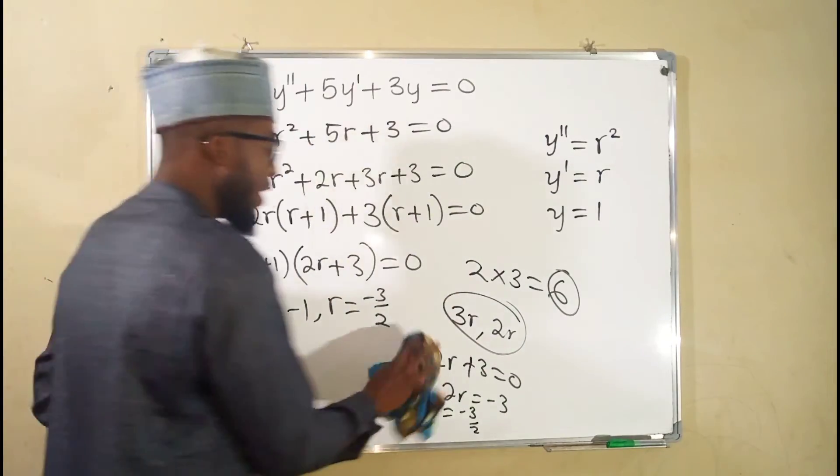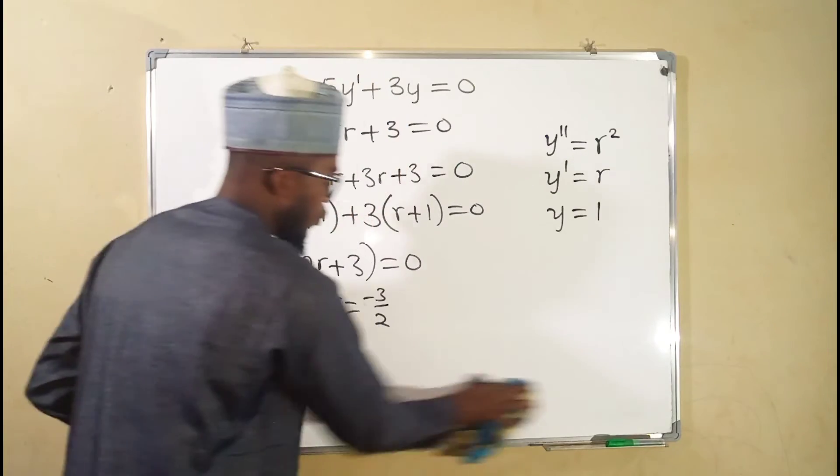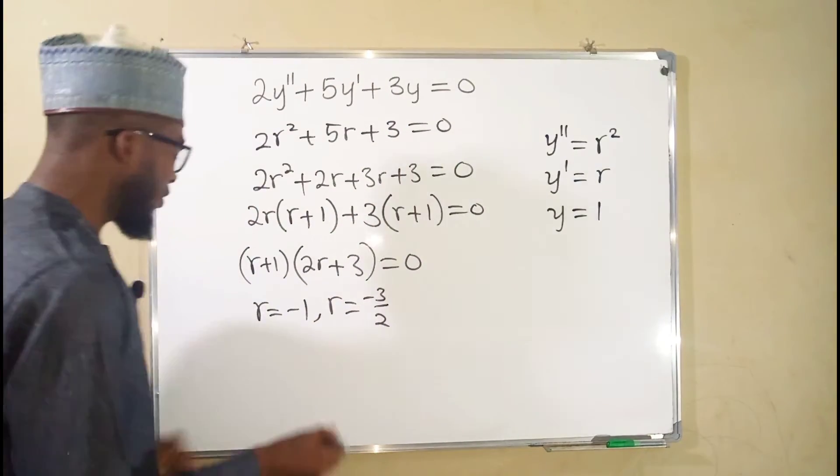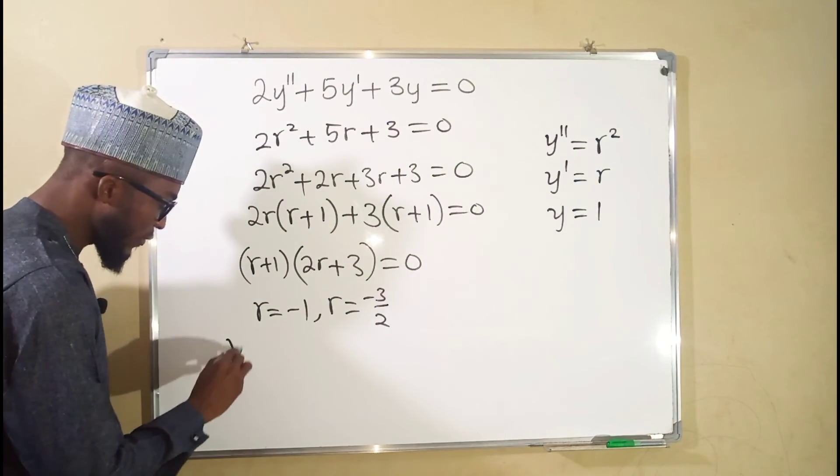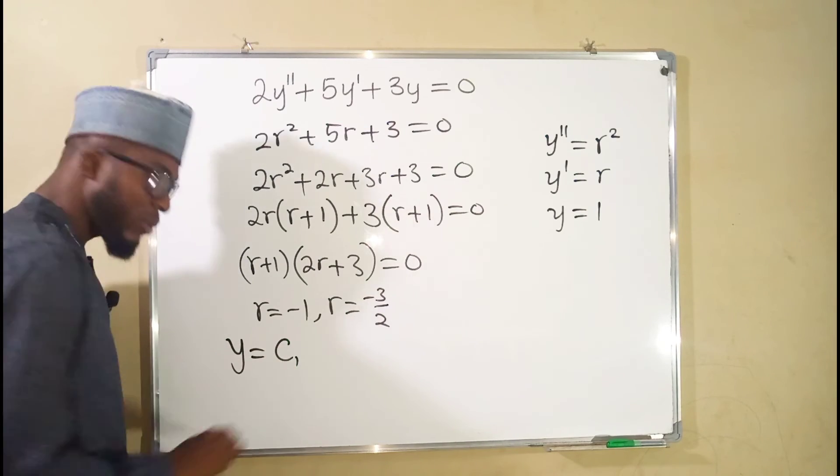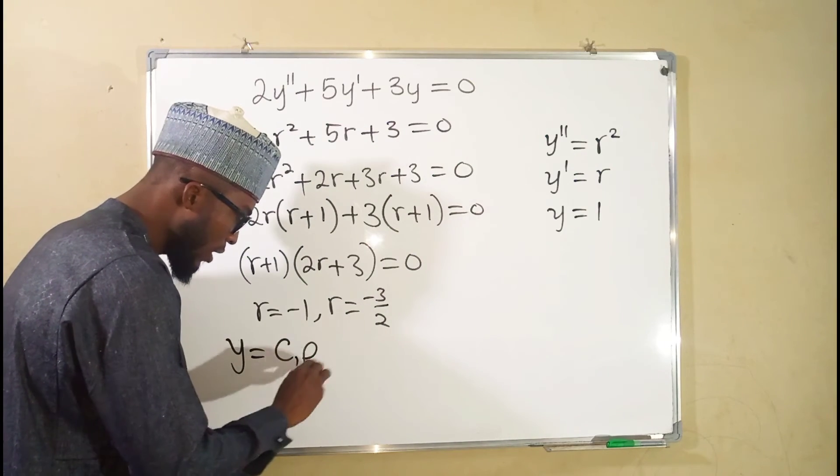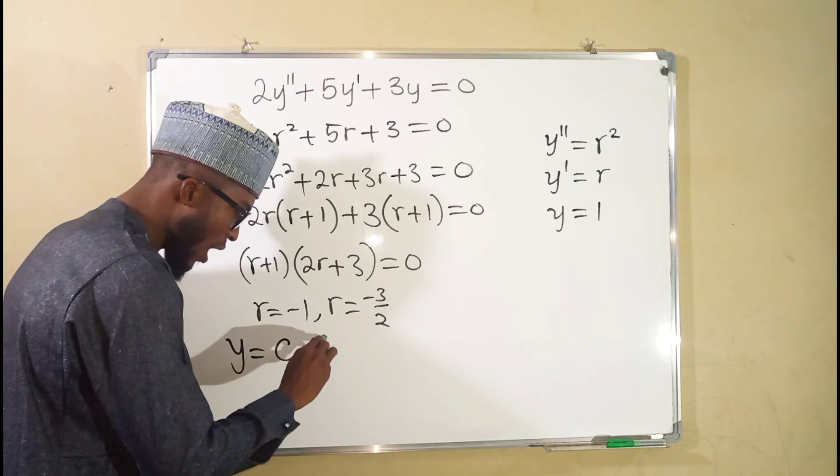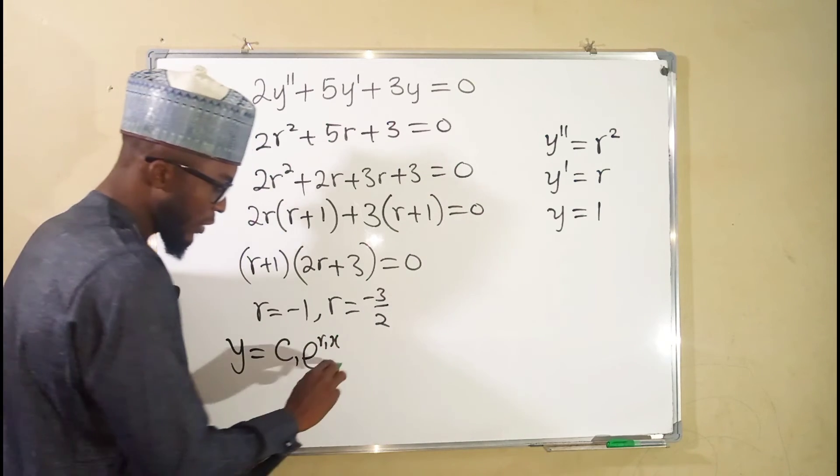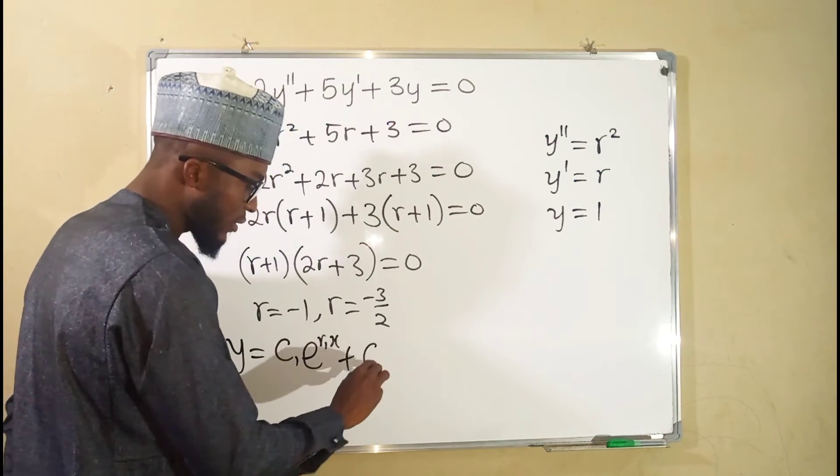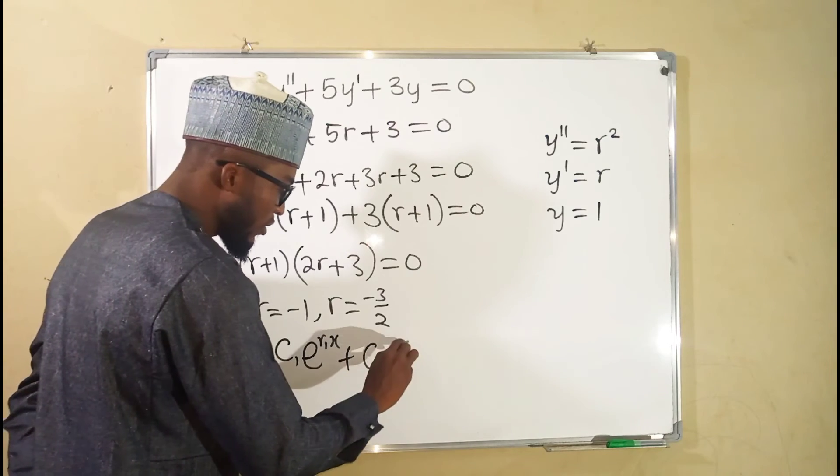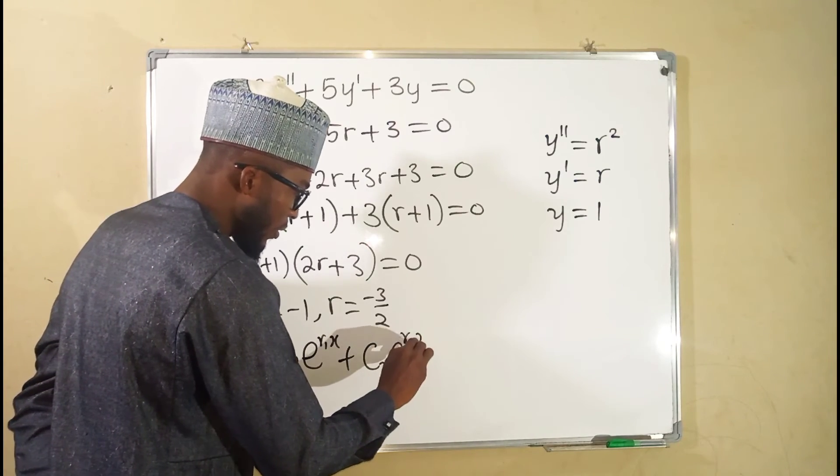So these are real and distinct roots. When you have real and distinct roots, the general solution is in the form of y equal to a constant, e to the r1x, plus another constant, e to the r2x.